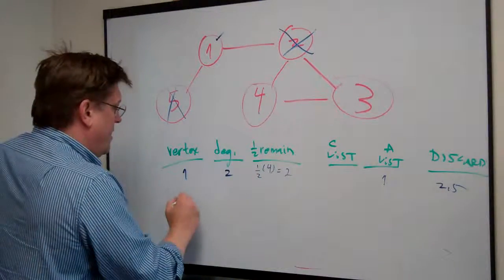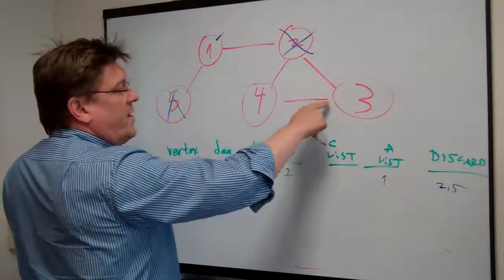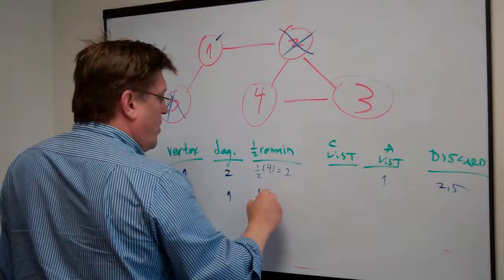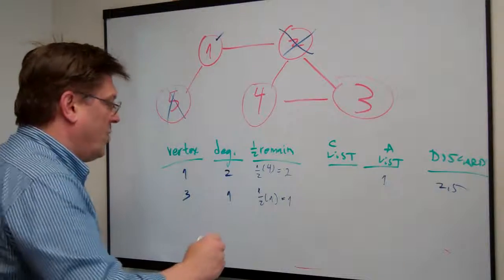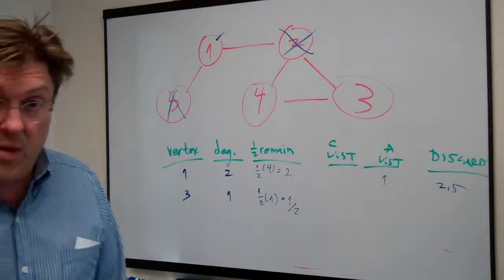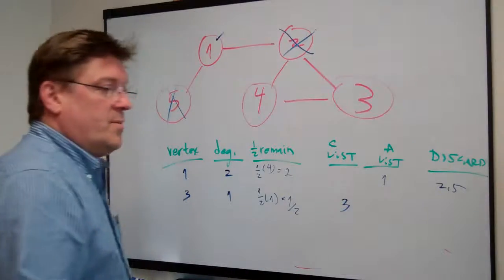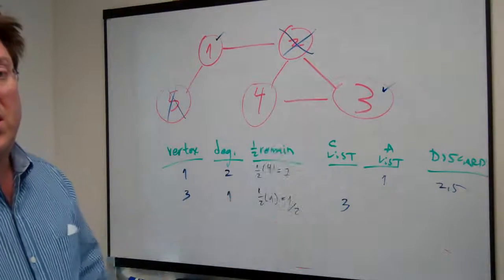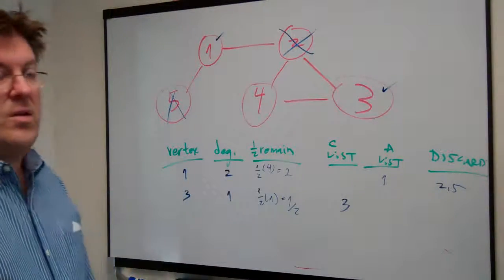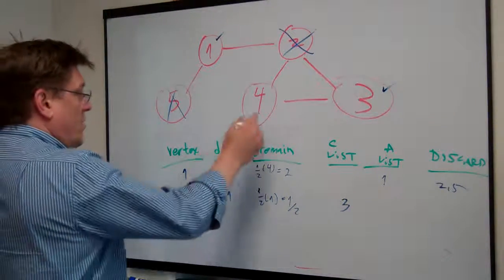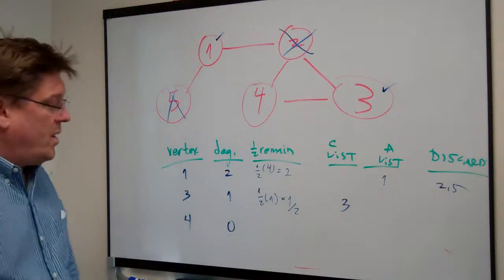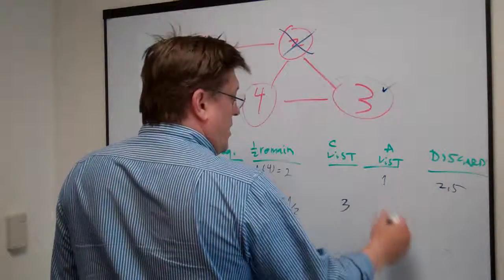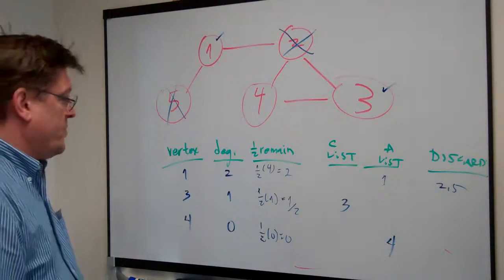Next we take node 3. Its degree among remaining nodes is 1, and there's only 1 remaining node, so half of 1 is 0.5. Since 1 is greater than 0.5, node 3 goes into the clique list, and we discard nodes not connected to it — node 4 stays. Finally, node 4 has degree 0. Zero is not greater than zero, so node 4 goes into the anti-clique list. Nothing left to discard.